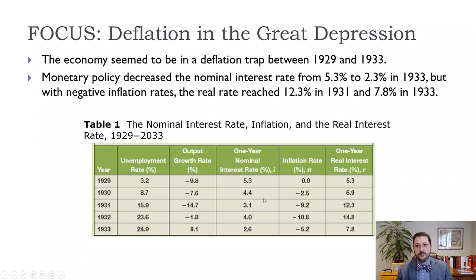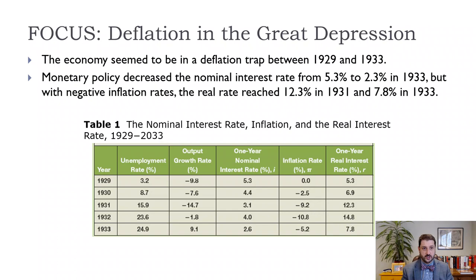Let's look at the Great Depression, which really seems to have been a perfect example of a deflationary trap. Between the start of the Great Depression in 1929, when we had the stock market crash, and the real bottom around 1933, it took another seven to eight years to climb out, with ups and downs along the way. The unemployment rate was quite low in 1929 — it was the end of the roaring 20s and the economy seemed to be doing really well. Then we had the stock market crash, output falls, and the inflation rate was basically zero in 1929.